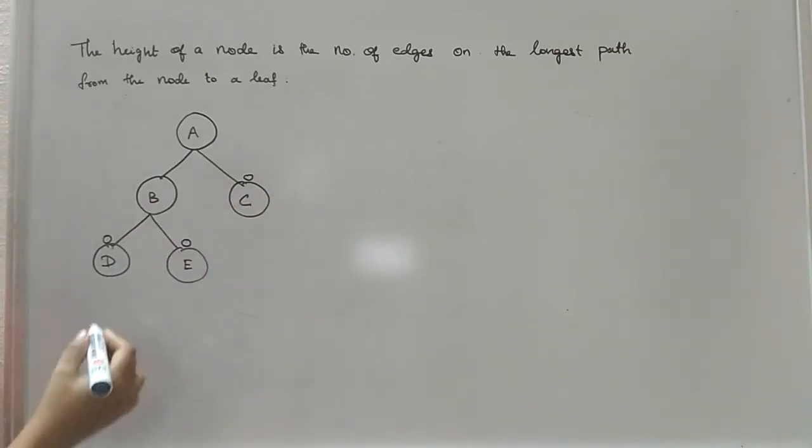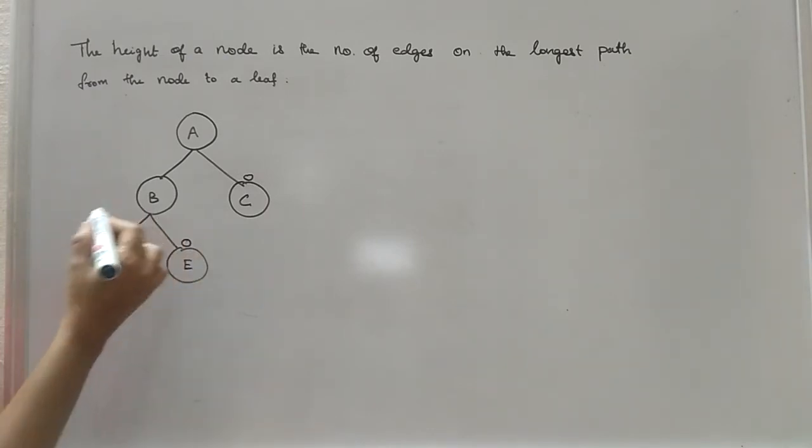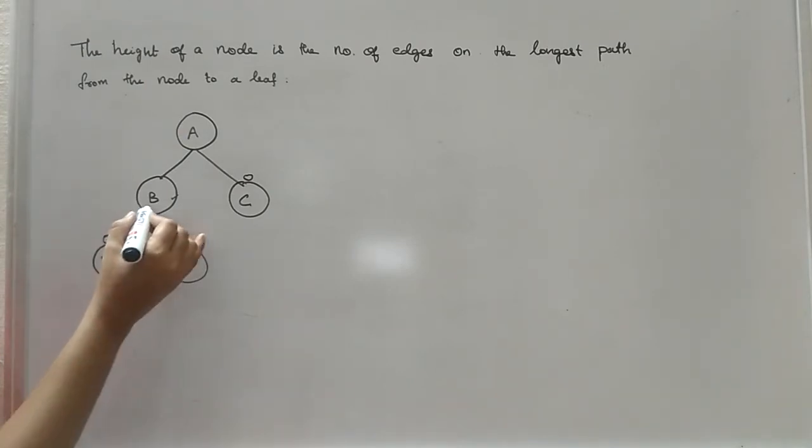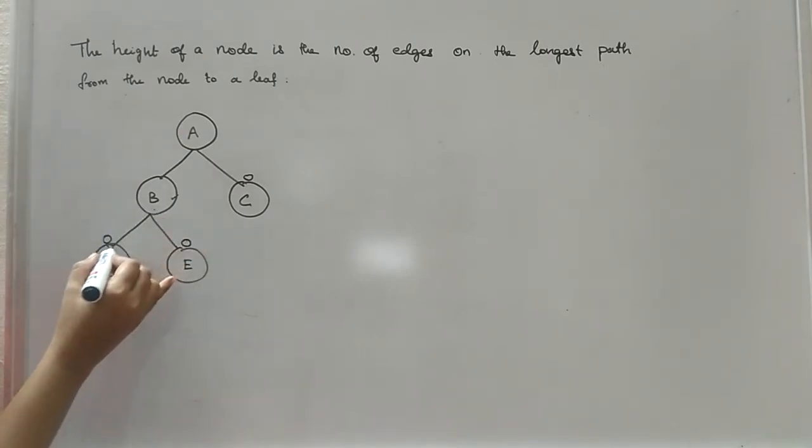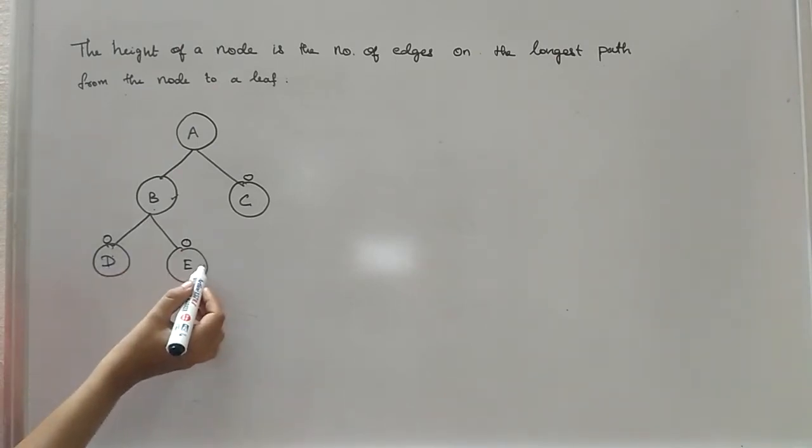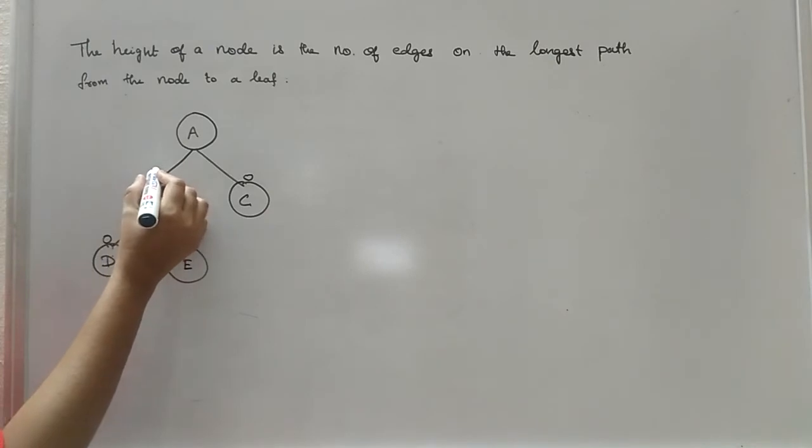And if you are taking this one, for example, if you are taking node B, from node B you can reach the leaf node with a single edge. It may be on the left hand side or on the right hand side. So the height of node B is 1.